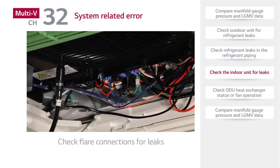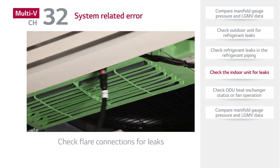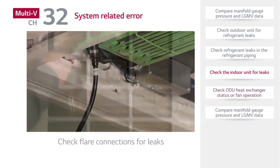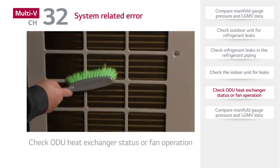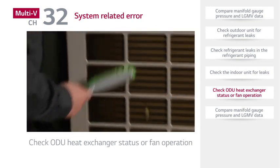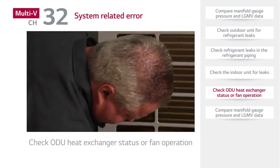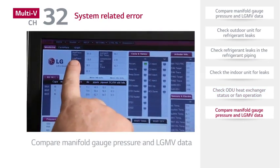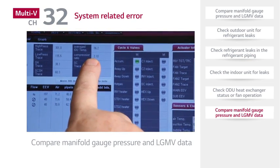Be sure to check the field flare connections for leaks. After checking the indoor unit, check the outdoor unit heat exchanger status or fan operation. After inspecting the outdoor heat exchanger and fan operation, check whether the LGMV data is normal.